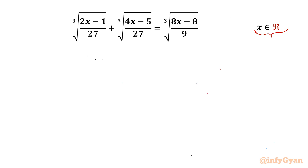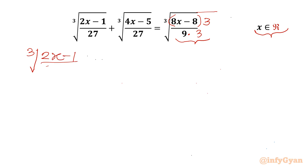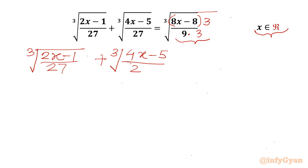Let us get started by multiplying our RHS radicand by 3 in the numerator and in the denominator, so 9 times 3 will give us 27. I can write the equation: cube root of (2x − 1)/27 plus cube root of (4x − 5)/27 equal to cube root of 3 times 8 times x.